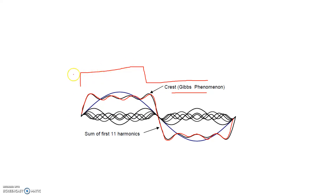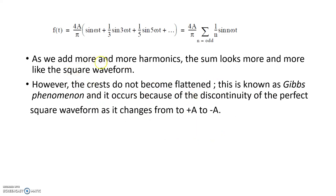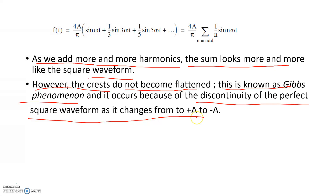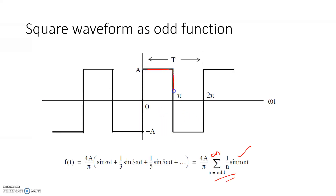The crest will oscillate like a sine wave instead of becoming a horizontal line parallel to the x-axis, and this is called Gibbs phenomenon. As we add more and more harmonics the sum looks more and more like a square wave, however the crests do not become flattened. This is known as Gibbs phenomenon, and it occurs because of the discontinuity of the perfect square waveform as it changes from +a to -a amplitude.